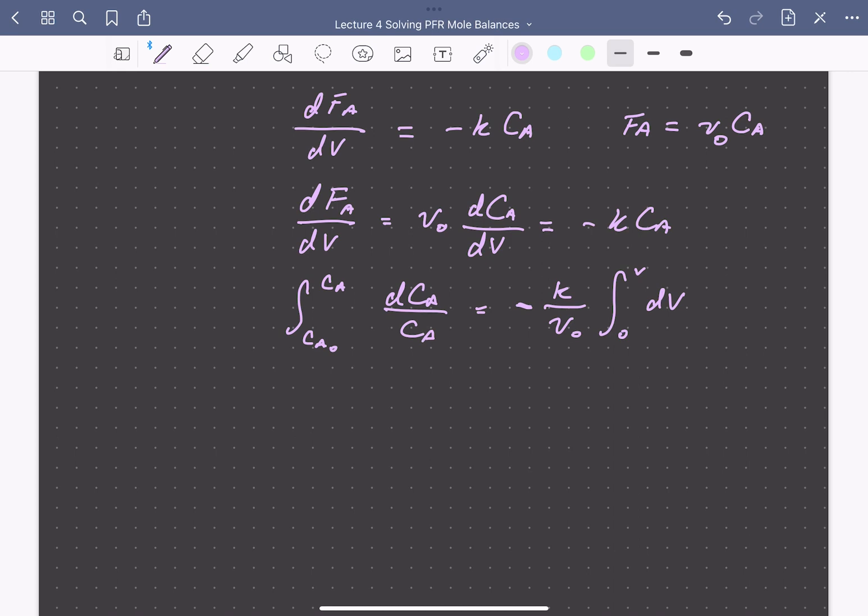We can solve explicitly for the concentration of A to get the concentration profile along the length of the reactor. The concentration of A at any point is equal to the initial concentration times this exponential function, which depends on the reaction rate constant, the position along the reactor or the reactor volume if we're looking at the outlet concentration, divided by the volumetric flow rate to the inlet of the reactor.